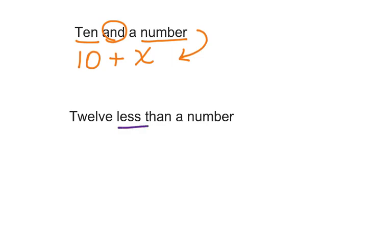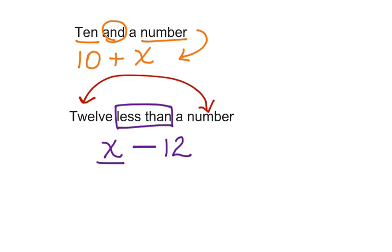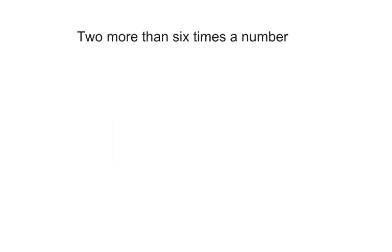Here's another one: 12 less than a number. This one's a little tricky because we have less than a number. So we know that less than means subtraction, but it's 12 less than a number. So a number x is going to come first, and 12 is going to come here. It's 12 less than this number x. Always be careful when you see those words less than because often times you're going to have to reverse the number and the variable so that the expression makes sense.